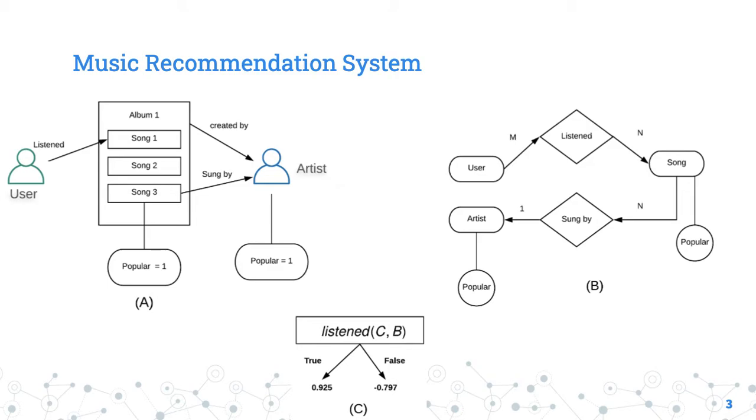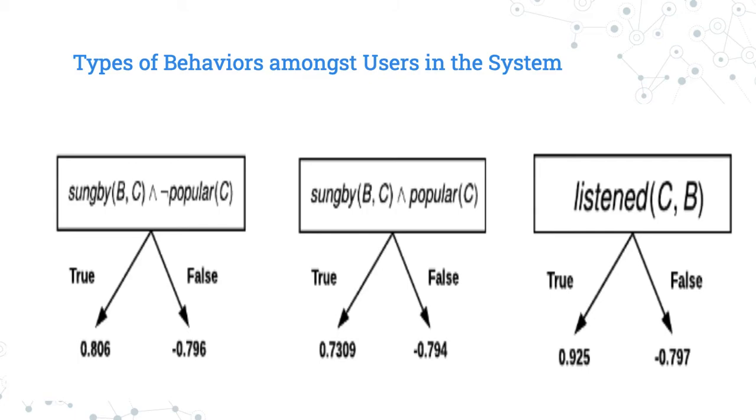What are the types of things that could be learned? The first example is that a user listens to song B if it's sung by an artist C, and the artist could either be popular or not popular. If it's a popular artist, that kind of behavior is usually found in a music recommendation system. If it's not a popular artist, then it's collaborative behavior. They're listening to the song because C listened to it. Also, if the artist is not popular, it could be fan behavior. They're listening to the song because it was sung by artist C, whether they're popular or not.